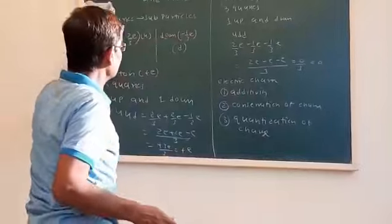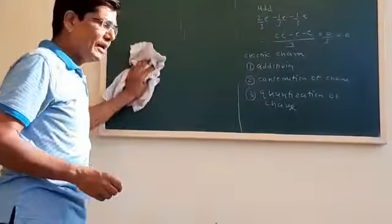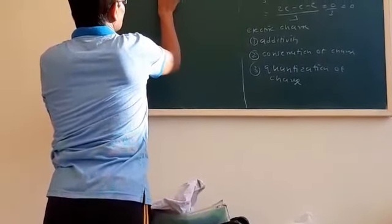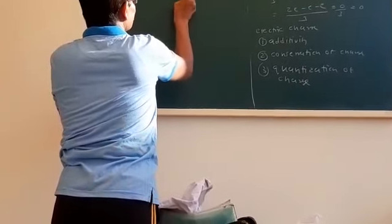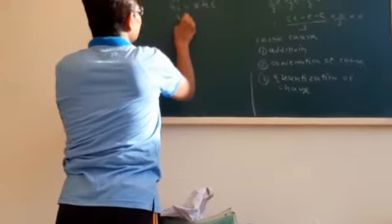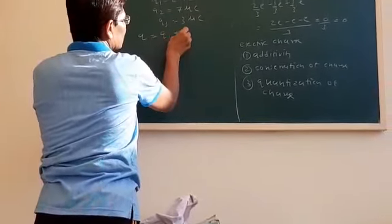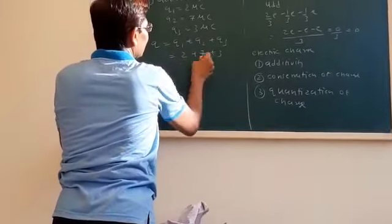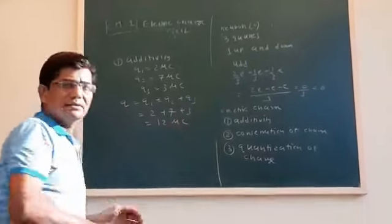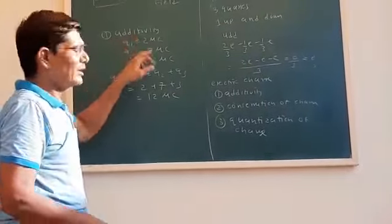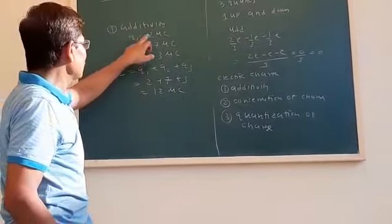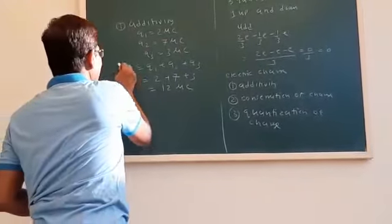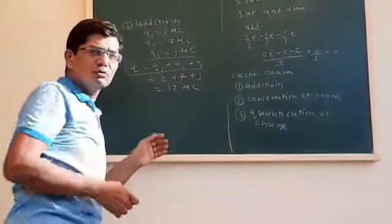Additivity: just like any algebraic number, electric charge can also be added — that is called additivity. For example, if Q1 is 2 microcoulomb, Q2 is minus 7 microcoulomb, and Q3 is 3 microcoulomb, then the total charge is Q1 + Q2 + Q3, which is 2 − 7 + 3. Just like algebraic addition, we can add the charges.